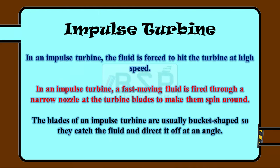In an impulse turbine, the fluid is forced to hit the turbine at high speed. A fast moving fluid is fired through a narrow nozzle at the turbine blades to make them spin around. The blades of an impulse turbine are usually bucket-shaped so they catch the fluid and direct it off at an angle.